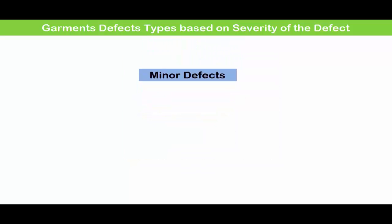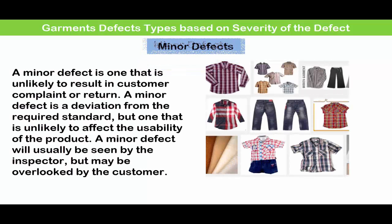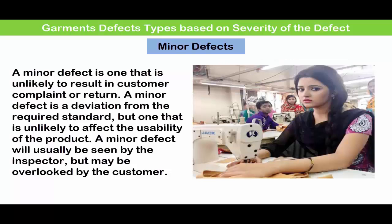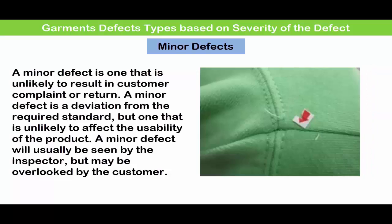Minor defect. A minor defect is one that is unlikely to result in customer complaint or return. A minor defect is a deviation from the required standard but is unlikely to affect the usability of the product. A minor defect will easily be seen by the inspector but may be overlooked by the customer.